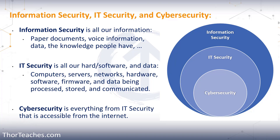For now, understand we don't want any unauthorized access, use, disclosure, disruption, modification, or destruction of our data. To keep our data secure, we use three types of controls. First, physical security — all the things you can touch: walls, doors, bollards, turnstiles — anything that gives us a strong perimeter. And if what we're protecting is important enough, we have them throughout our building, not just at the perimeter.